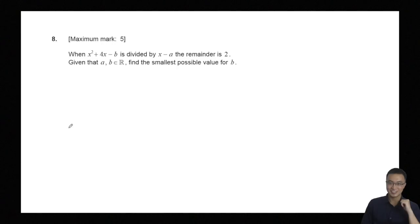The question is about the remainder theorem. When x² + 4x - b is divided by x - a, the remainder is 2. Given that a and b belong to the real numbers, find the smallest possible value for b. I will use the remainder theorem to solve this problem.